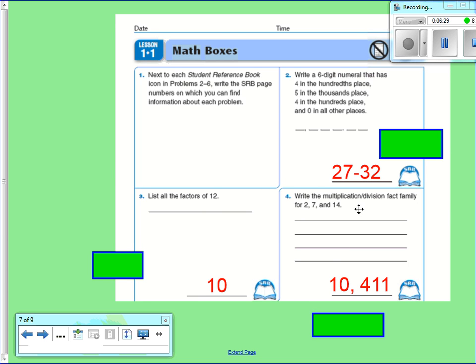Multiplication and division fact family, 2, 7, and 14. Go ahead and list the fact family. So for example, 2 times 7 equals 14. That's one of your answers out of the four. Take a look at page 10 or 11.